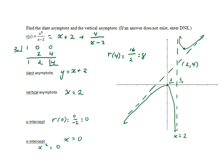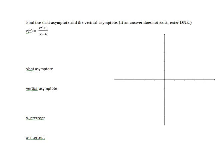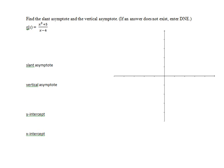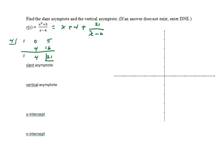In the next example, we have x squared plus 5 divided by the quantity x minus 4. So we'll have 4 divided into 1, 0, 5 — the x term is missing. When we do the division, 1 is the leading coefficient of the quotient. 1 times 4 is 4, plus 0 is 4. 4 times 4 is 16, plus 5 is 21. So the given function is equivalent to x plus 4 plus 21 over x minus 4.